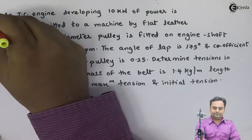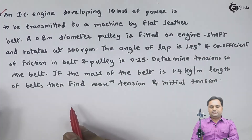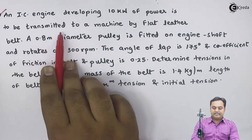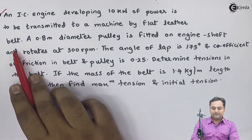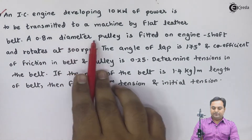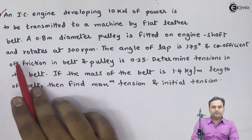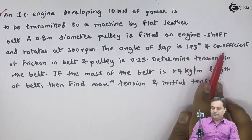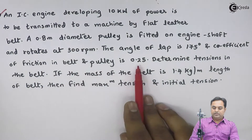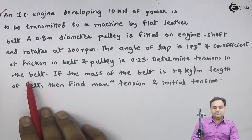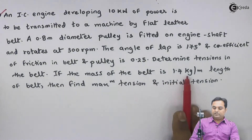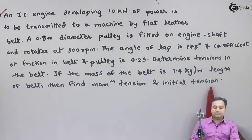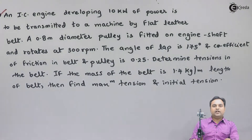Let us take the next question. An IC engine developing 10 kilowatts of power is to be transmitted to a machine by flat leather belt. A 0.8 meter diameter pulley is fitted on the engine shaft and rotates at 300 rpm. The angle of lap is 175 degrees and coefficient of friction between belt and pulley is 0.25. Determine tensions in the belt if the mass of the belt is 1.4 kg per meter length, then find maximum tension and initial tension.